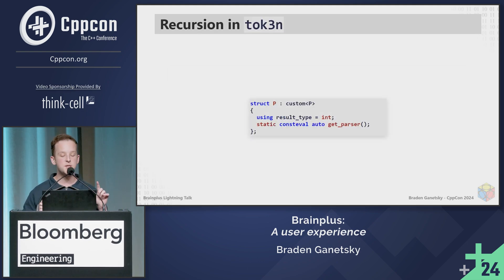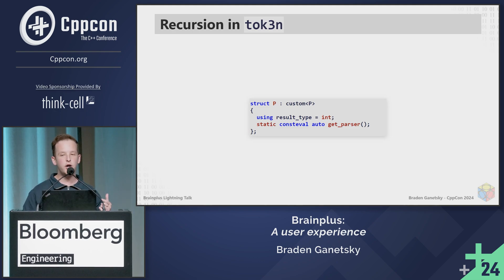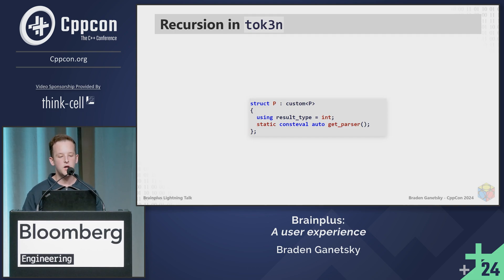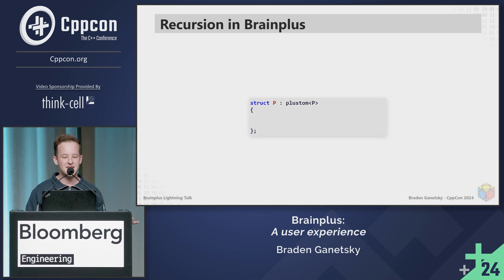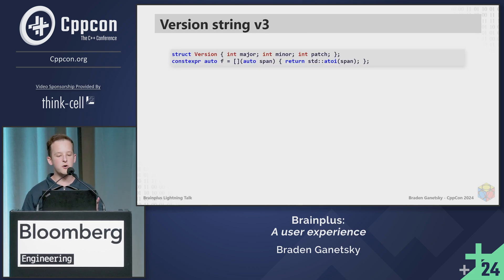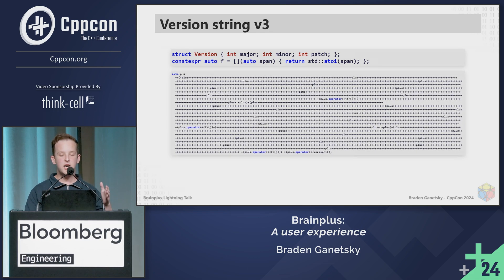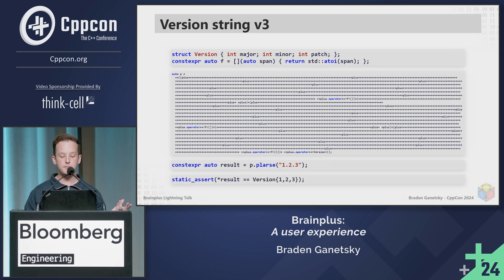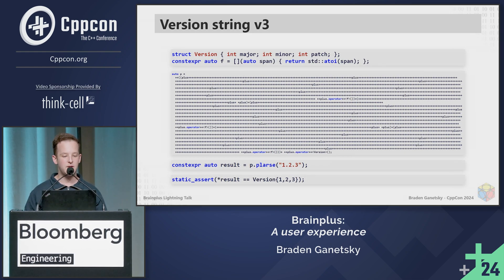One more thing: in Token, you recurse by inheriting from something called 'custom' with CRTP. You optionally provide a result type, but you do need a function called 'get parser'. In BrainPlus, it's not that different — you inherit from 'plus them', use 'plus alt type equals' whatever type you want (that's optional), and define a 'get parser' function. As my final example, this is version string v3: I have the Version struct, the function f, and here is the parser in its entirety. Calling p.plus of one, two, three parses into a version struct. That works.